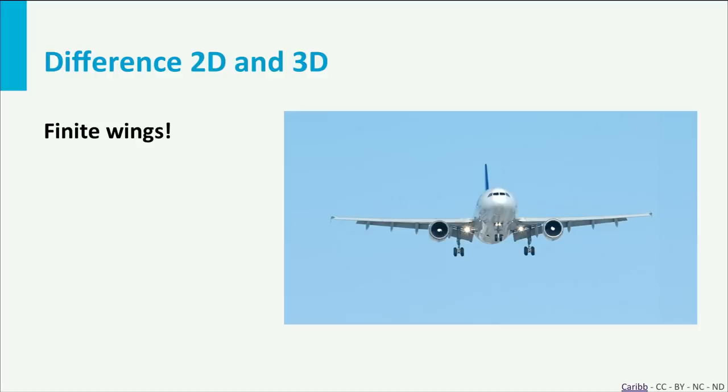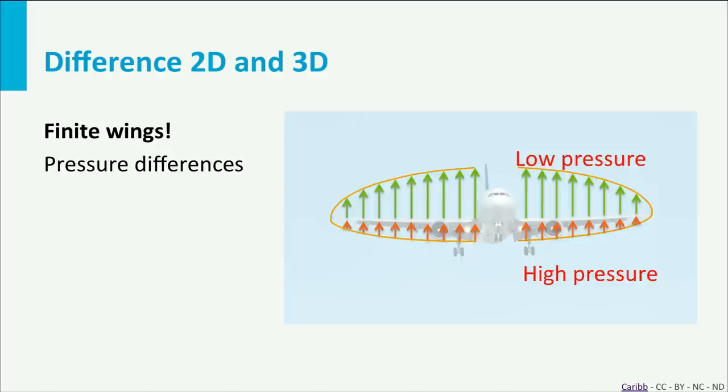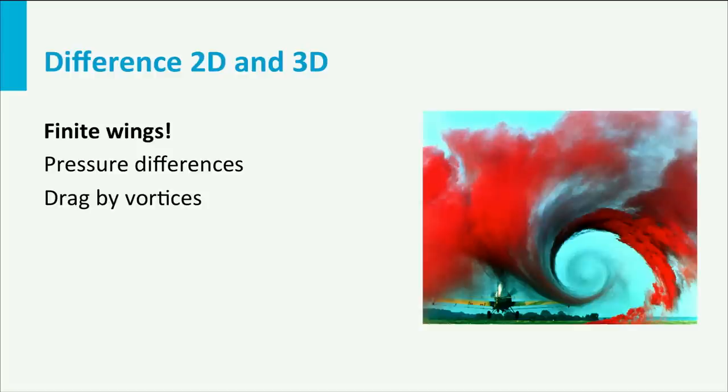Over the wing the air pressure is reduced. Under the wing the pressure is slightly increased. At the wing tip the high pressure from the lower surface may curl around the wing tip to match the low pressure at the upper skin of the wing. This generates vortices which may also cause significant drag forces.